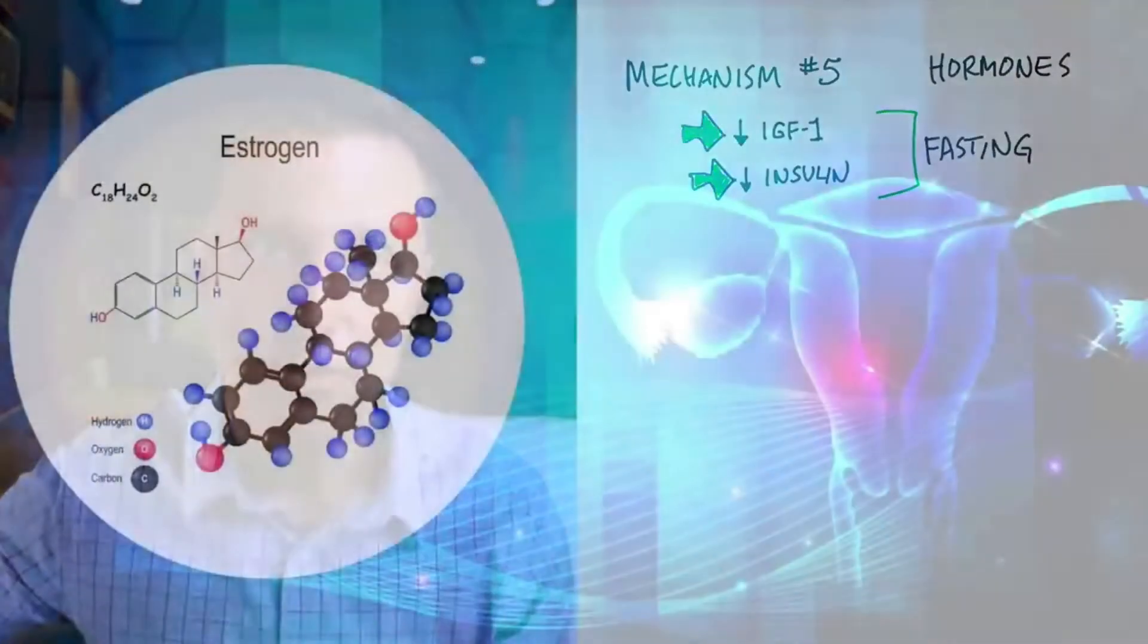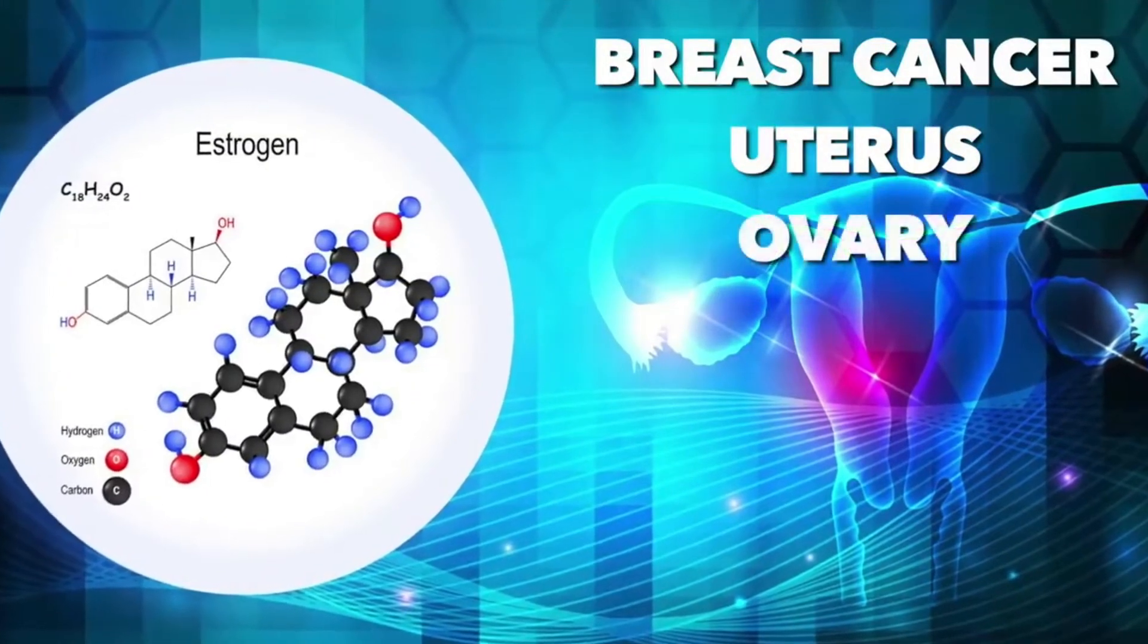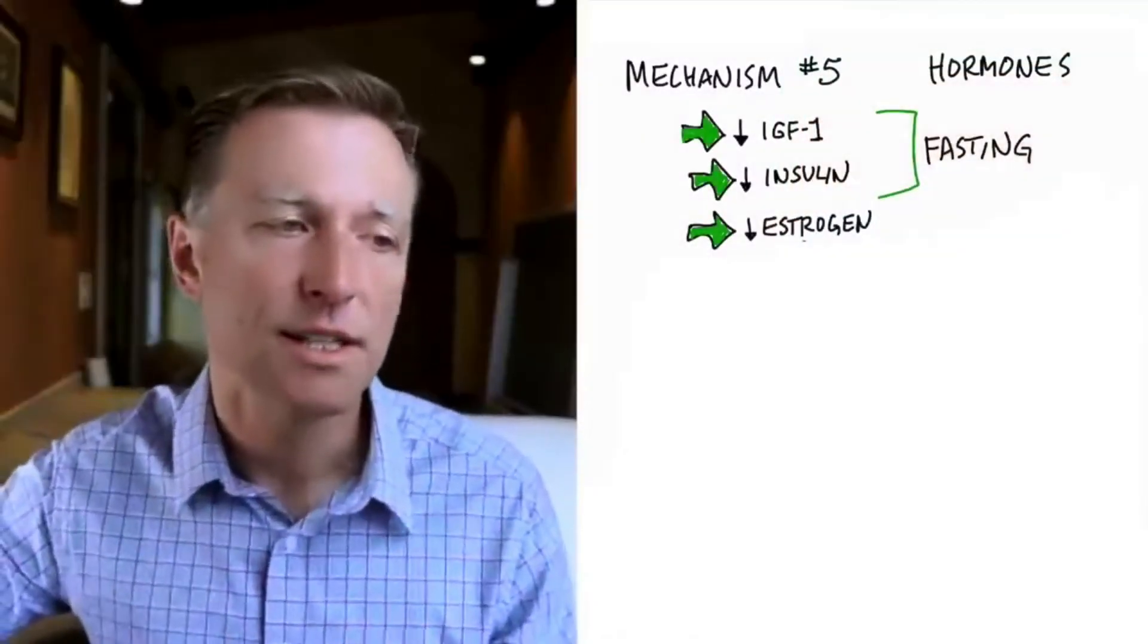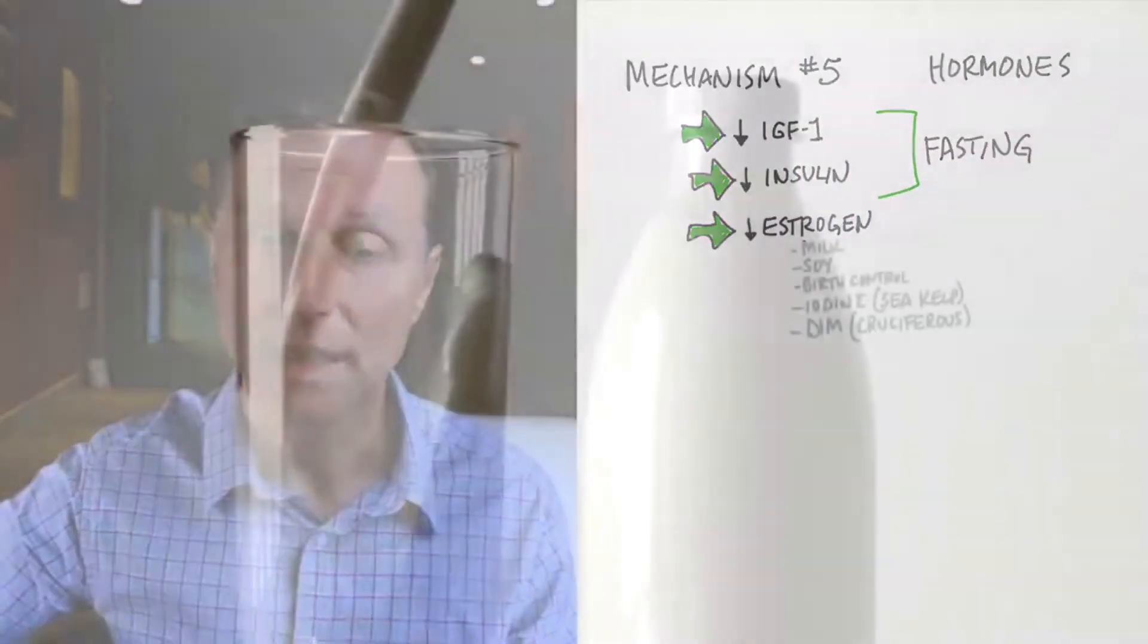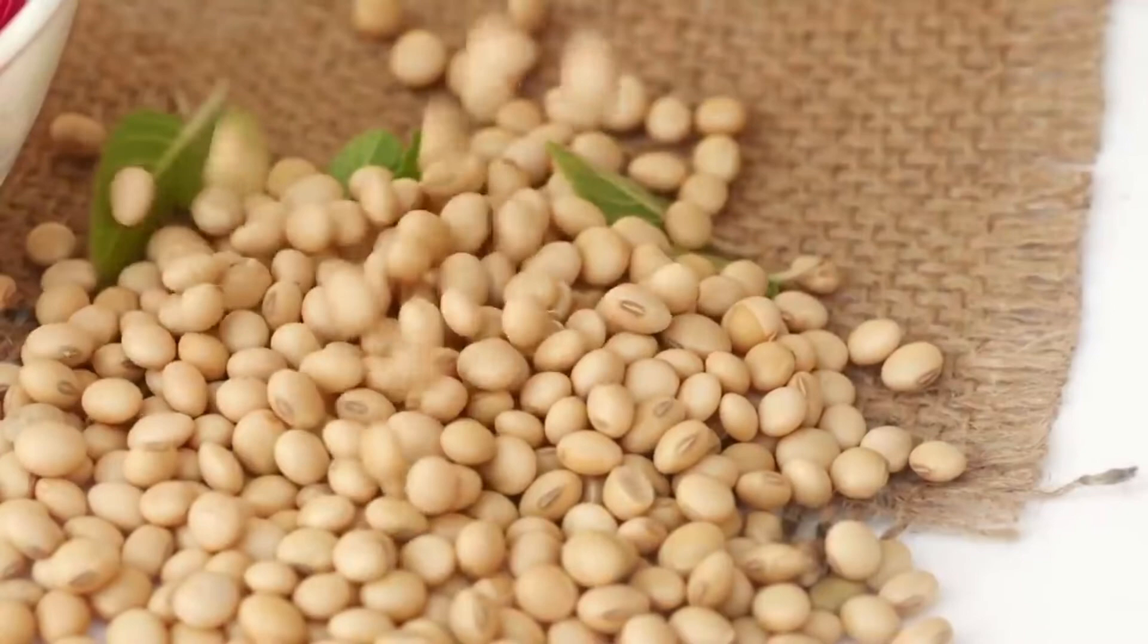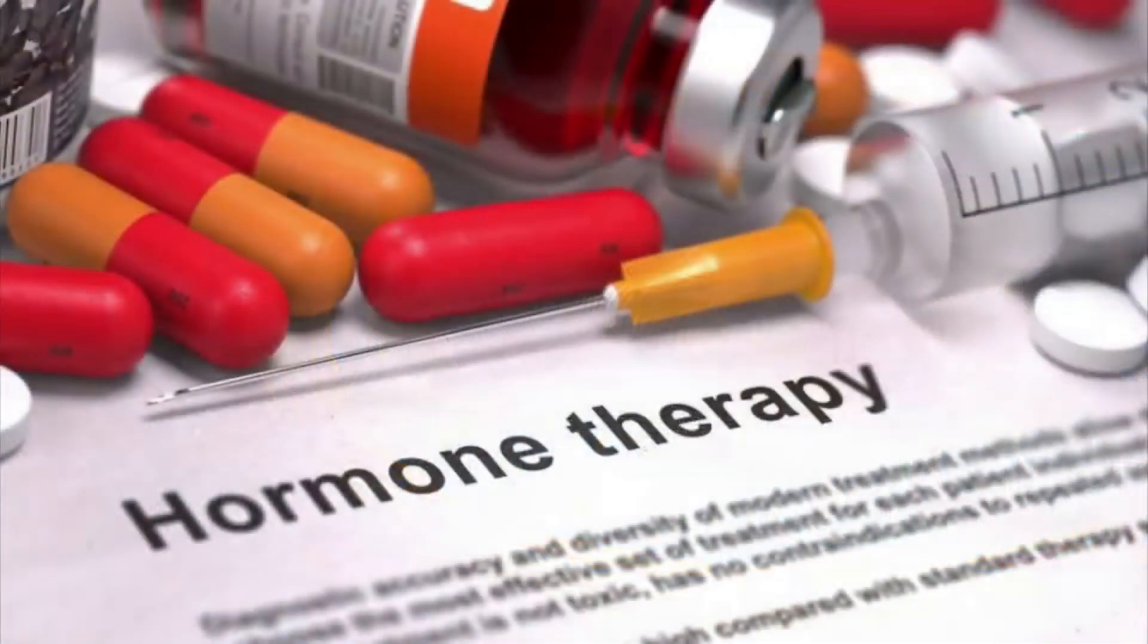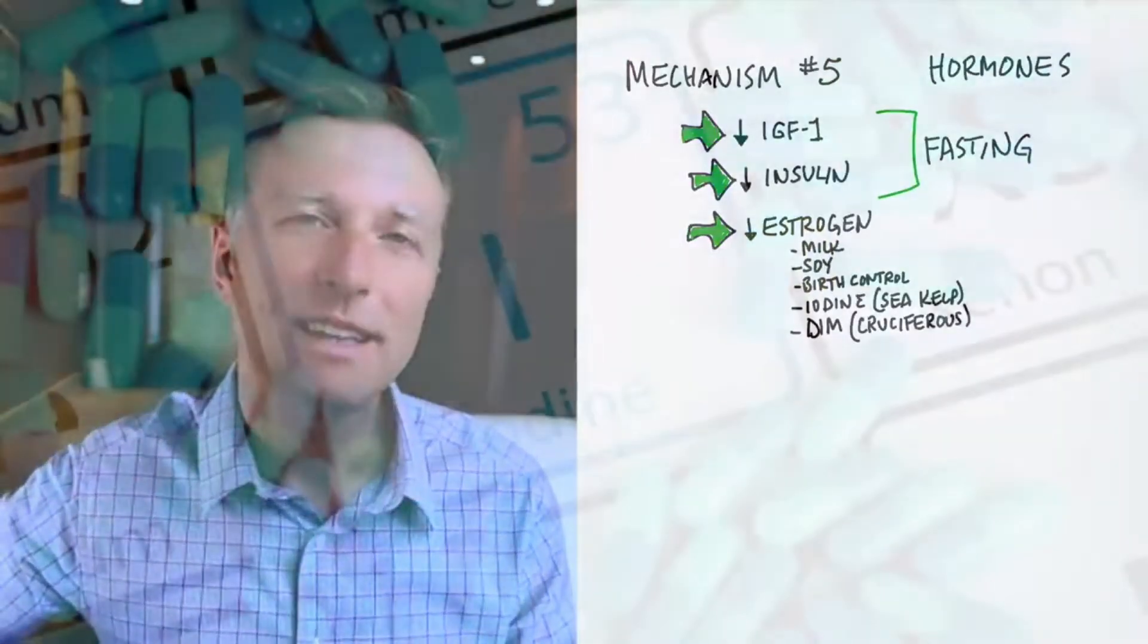And then we have estrogen. Estrogen in excess can trigger breast cancer and cancer of the uterus and cancer of the ovary. There are certain chemotherapies that block estrogen production. So anything that can increase estrogen is something you want to limit if you're trying to treat cancer and prevent cancer. Like milk, you want to limit dairy if you have cancer. Soy products. Soy is very estrogenic, especially the soy protein isolates. Birth control pills are estrogen. Hormone replacement therapy has estrogen in it. So, of course, if you have cancer and you're taking birth control pills and hormone replacement therapy, probably not the best idea.